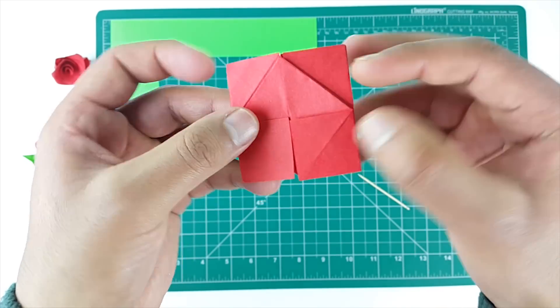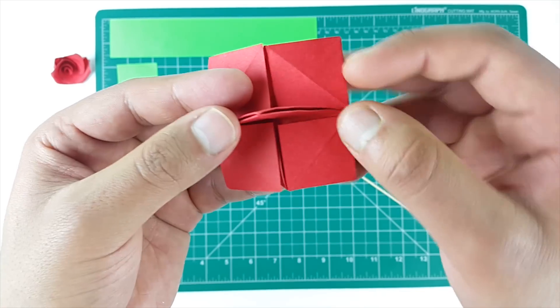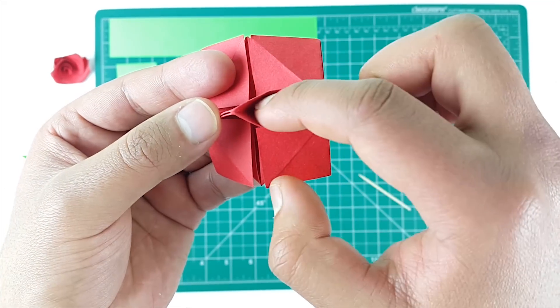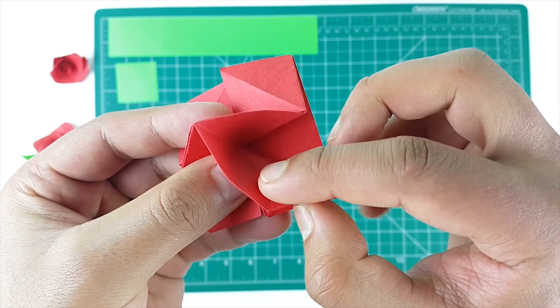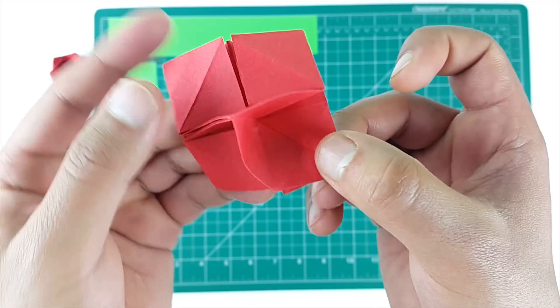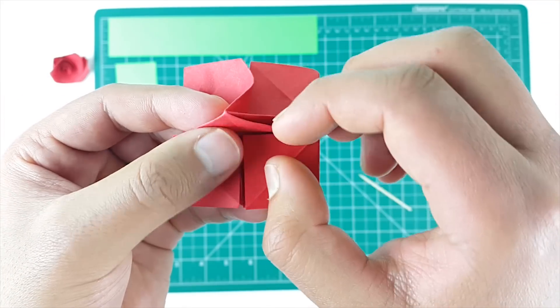Now turn it around and lift the small triangle we folded earlier. Now we will open another pocket so again insert your finger in the pocket and lift this edge and fold it like this. Repeat for the other side.